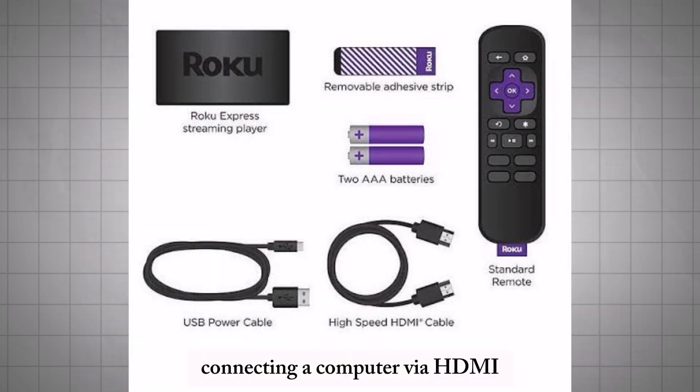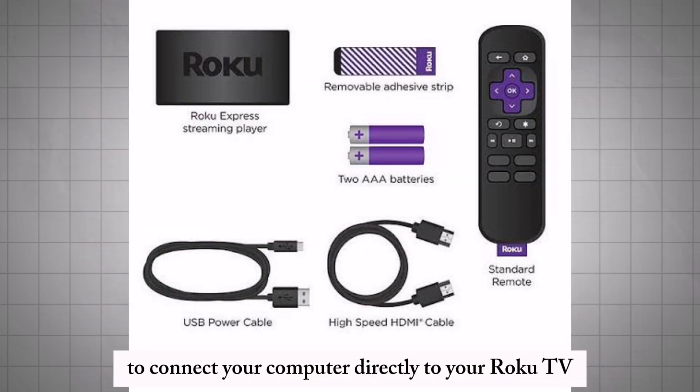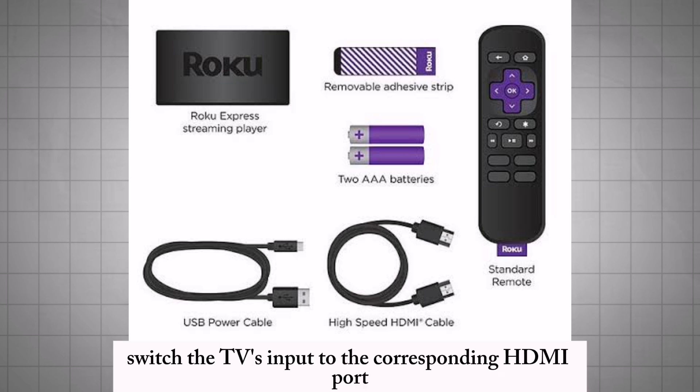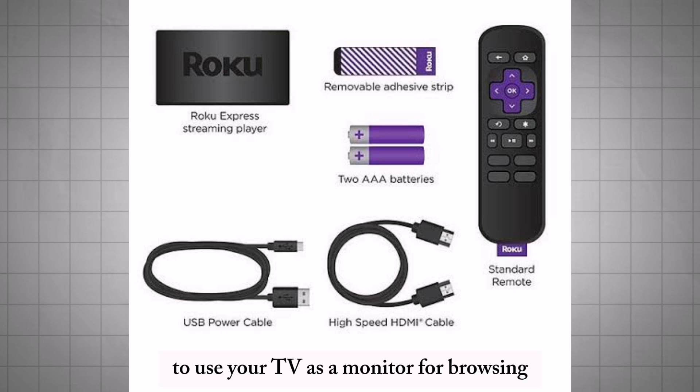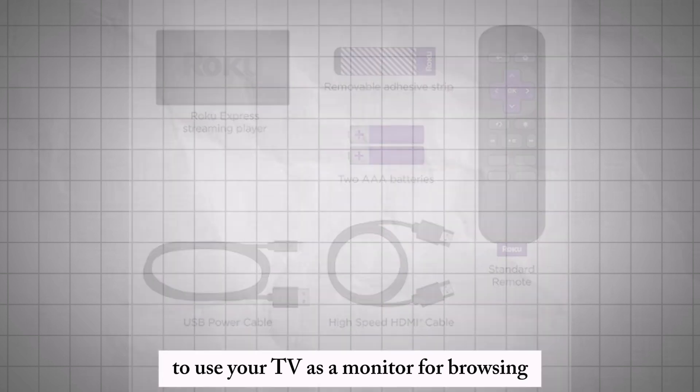Connecting a computer via HDMI. Use an HDMI cable to connect your computer directly to your Roku TV. Switch the TV's input to the corresponding HDMI port to use your TV as a monitor for browsing.